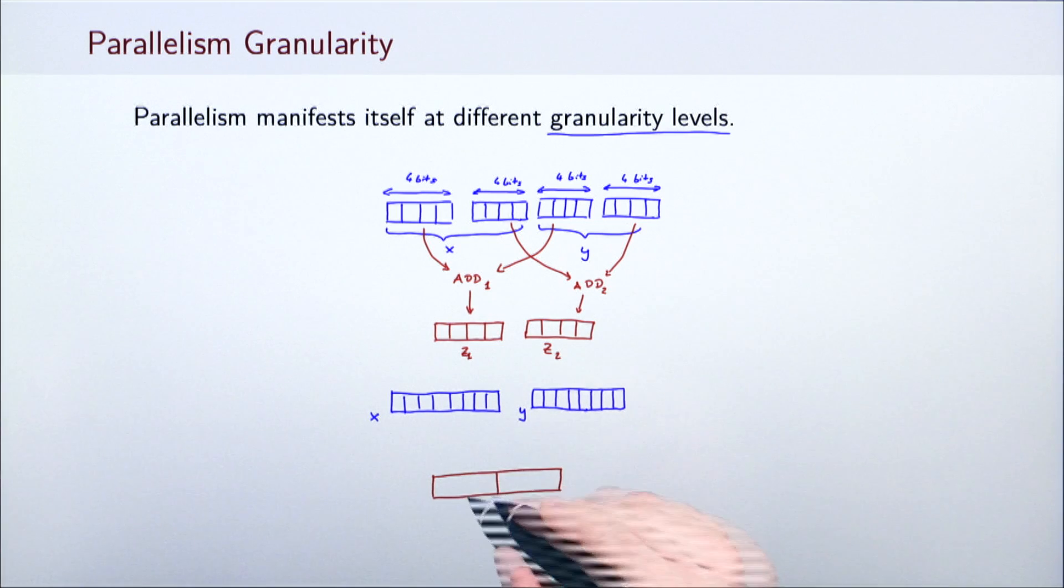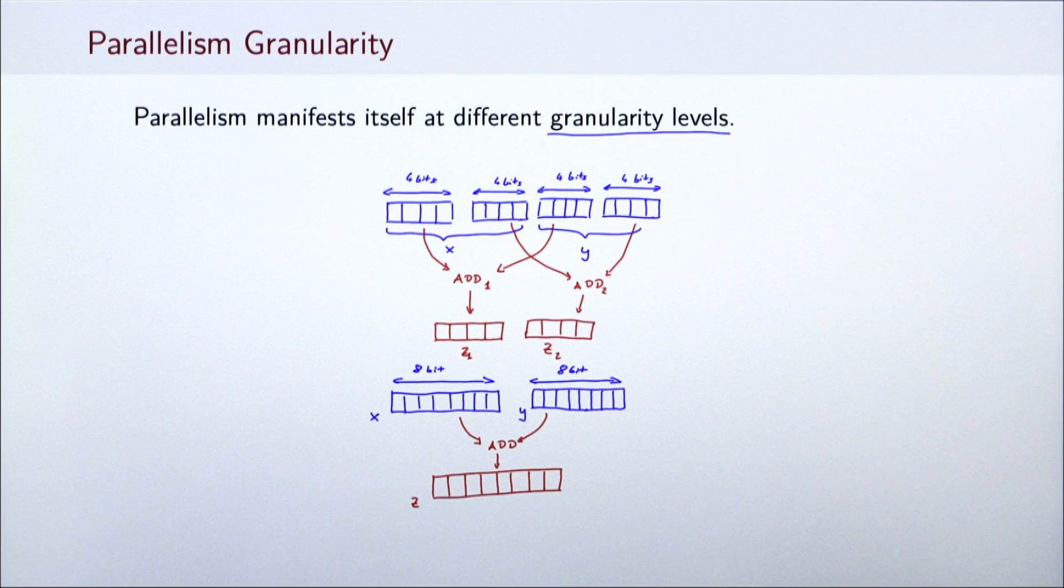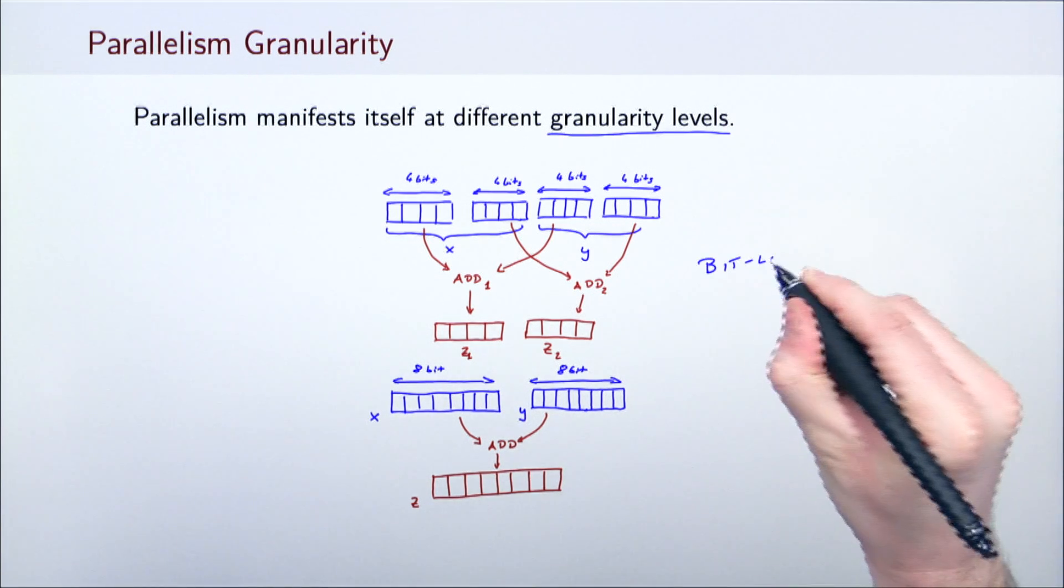Word size subsequently increased to 8 bits, then 16 bits and eventually 32 bits. Each time this happened, several instructions could be replaced by just a single one. This meant processing more data in the same time interval. In effect, performance was improved by parallelizing operations on the bit level, so we call this form of parallelization bit-level.